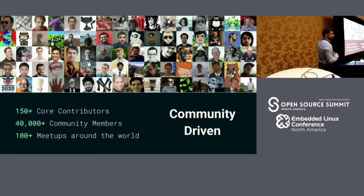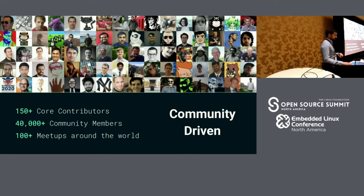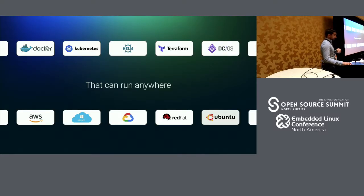Kong as in King Kong, because Mashape had an Ape logo back then. We open sourced it in 2015, and since then the adoption and the community has been great. It's a community-driven project on GitHub that runs anywhere.